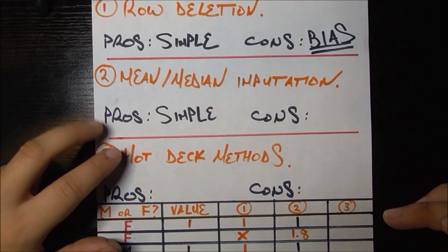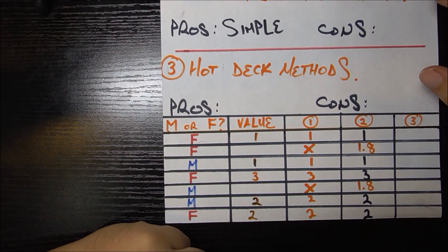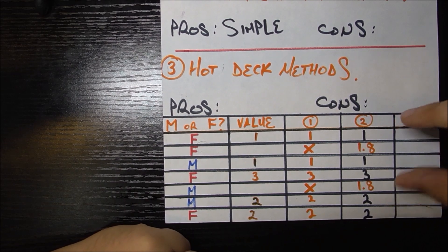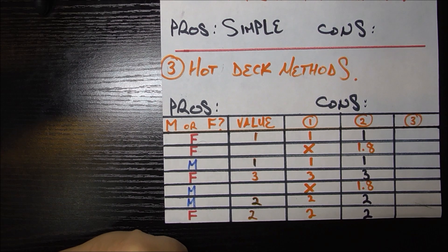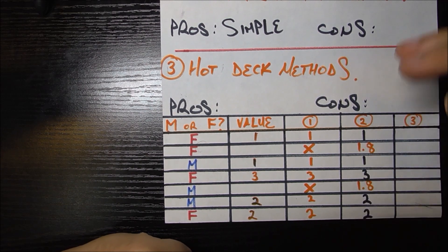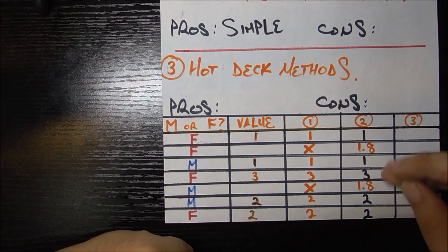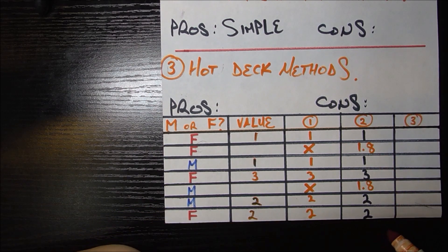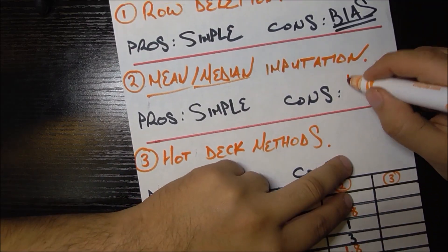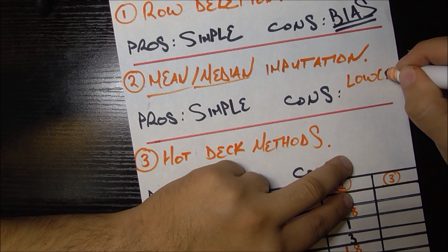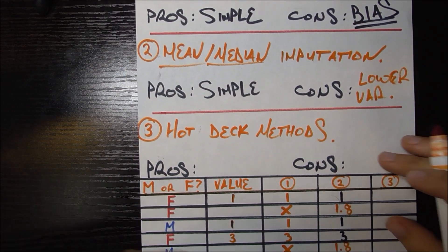So the con there is that it's going to artificially kind of reduce the variability of your data. When you have a lot of missing data to fill in and you fill in all of those missing data with the exact same value, your basically standard deviation or variance of your dataset is going to go down. It's going to seem like many of your data points have the exact same value, whether that value is the mean or the median of your existing values. So the con here is that it's going to lower your variability and that's not necessarily something you want.